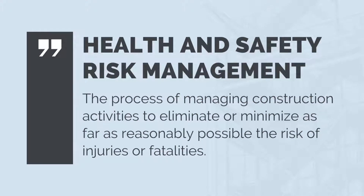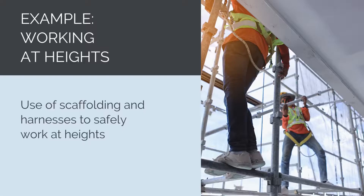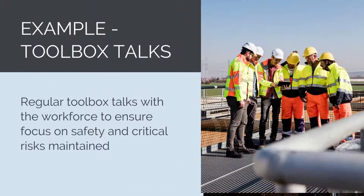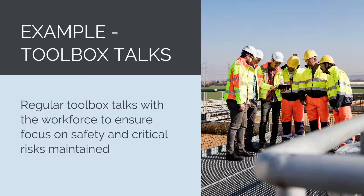Construction Health and Safety Risk Management covers the process of managing construction activities to eliminate or minimise as far as reasonably possible the risk of injuries or fatalities to workers or members of the public. Examples include the use of scaffolding and harnesses to safely work at heights, routine inspections on temporary construction electrical supplies by a qualified electrician, or toolbox talks with the workforce to maintain focus and attention to safety.